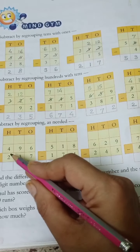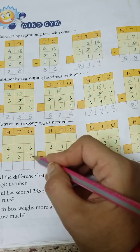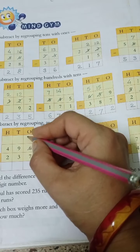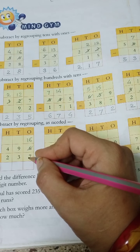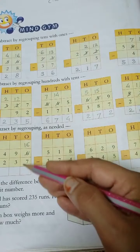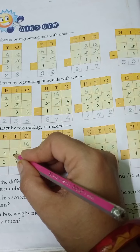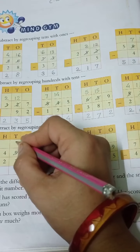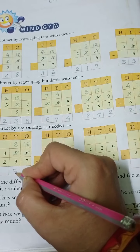Then next, 496 minus 237. 6 minus 7, is it possible? No. Again, 10 plus 6 is 16. Then 16 minus 7. 16 minus 7 is 9. Then same procedure, left side, 9 minus 1 is 8. Then 8 minus 3 is 5.